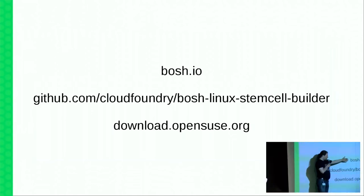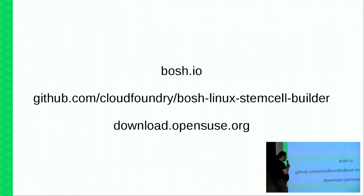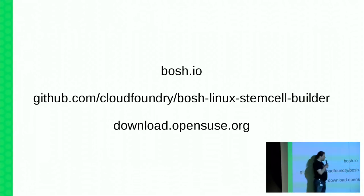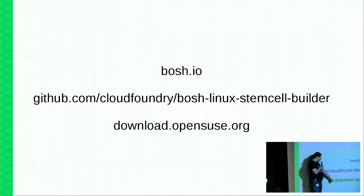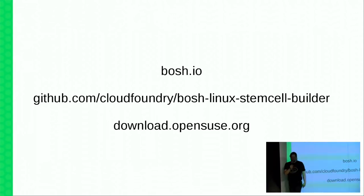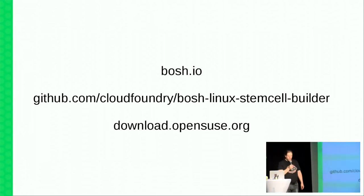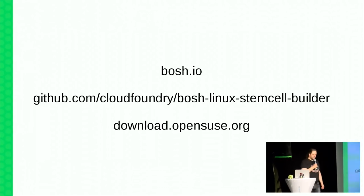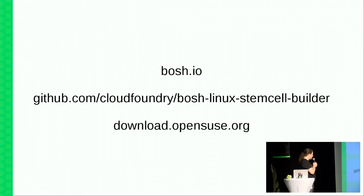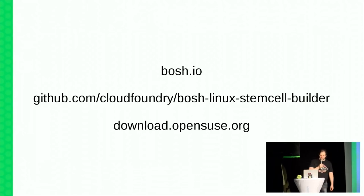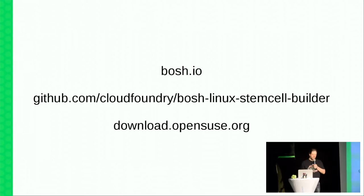bosh.io is the home page for BOSH — that's where the official stem cells and documentation are. We have code in the BOSH Linux stem cell builder, which is the tool that builds stem cells, where we have added OpenSUSE support. We will put the stem cells on download.opensuse.org so you can download and use them in BOSH and play around. It's not there yet, so if there's a hero somewhere, send them my way so we can make the final upload happen. Then OpenSUSE will be available as a stem cell for use by BOSH running Cloud Foundry or other applications.